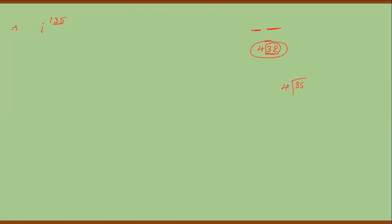So 135 is of the form 4k+3. Therefore iota^135 = iota^(4k) × iota³. Since iota^(4k) = 1, we get iota³ = -iota. So the answer is -iota. This means for any power of iota, divide the last two digits by 4, find the remainder, and that remainder tells us the answer.